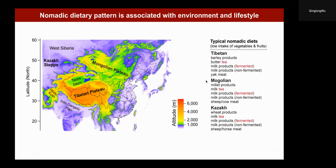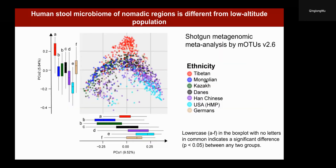We are very curious about this type of dietary pattern because we think it may be related to human adaptation to the high altitude environment. So next, we compared the gut microbiome patterns between high altitude and low altitude populations.